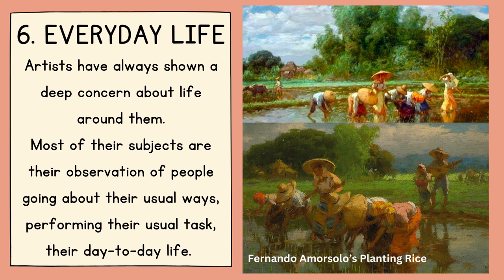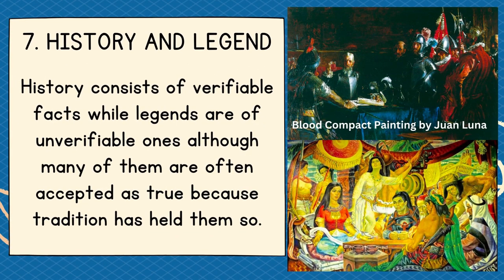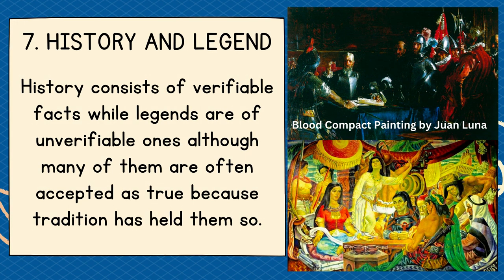Sixth is everyday life. Artists have shown a deep concern about life around them — their subjects are observations of people going about their usual ways, performing their usual tasks and day-to-day life. Fernando Amorsolo's Planting Rice is a good example of typical life in the countryside. Seventh is history and legend. History consists of verifiable facts while legends are unverifiable, though often accepted as true by tradition. History and legend are popular subjects of art.